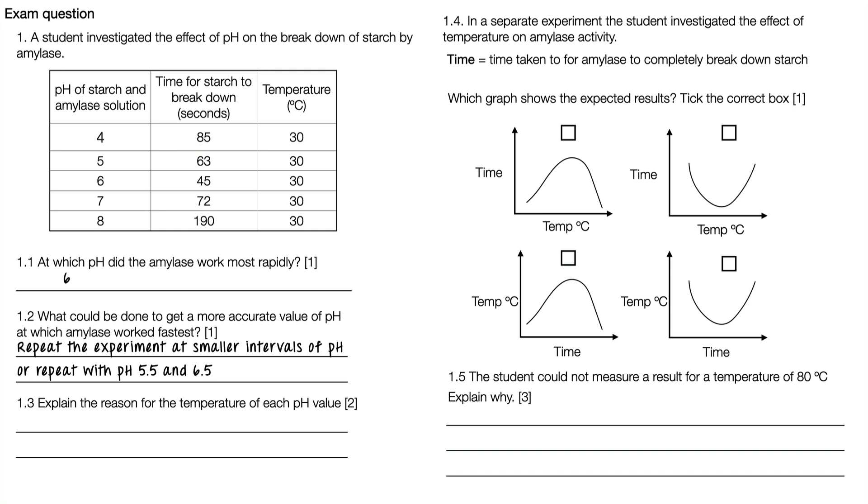1.3: explain the reason for the temperature of each pH value. That's worth two marks. This is because temperature is a control variable or is kept the same, and we do that so it doesn't affect the time for starch to break down, because temperature affects enzyme action as well. That will get you the two marks.